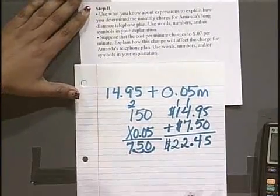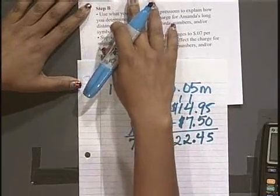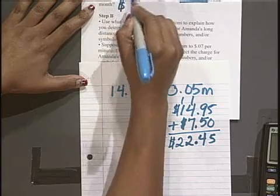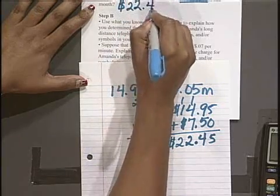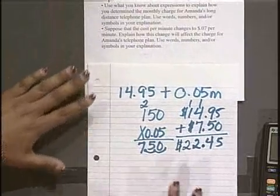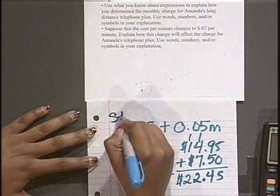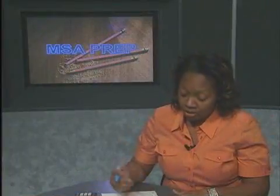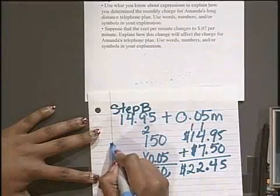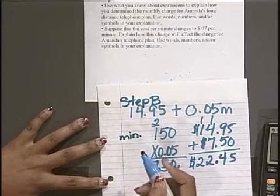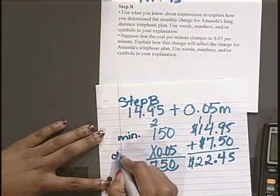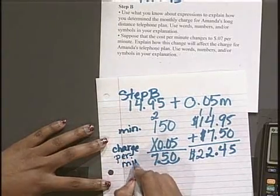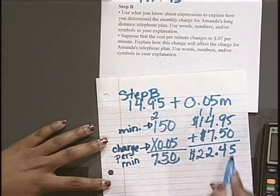So they want to know her monthly charge. For step A, how much is the monthly charge for Amanda's long distance? She's being charged $22.45. All right. This will be considered my step B. Because remember we can use numbers and symbols in our explanation. I will label this as minutes. And I will label this as the charge per minute.